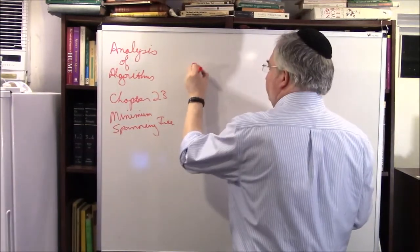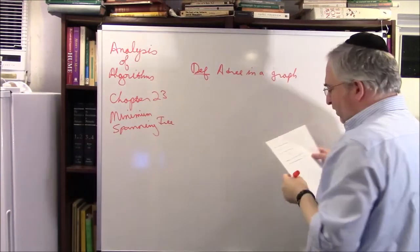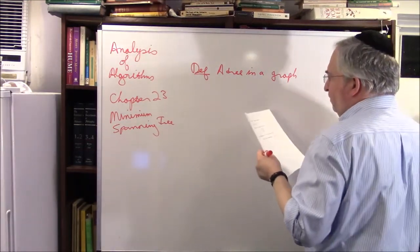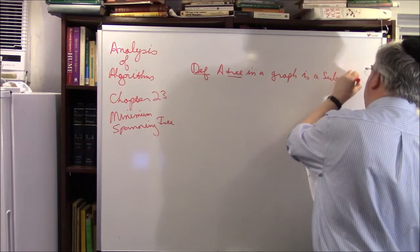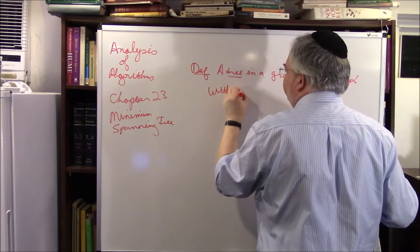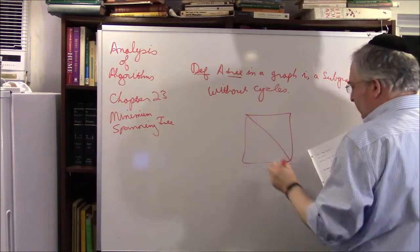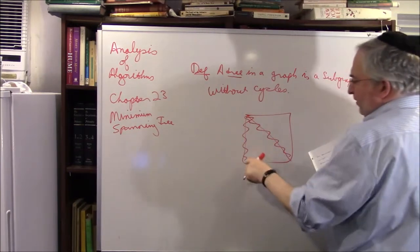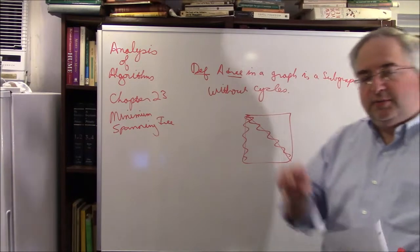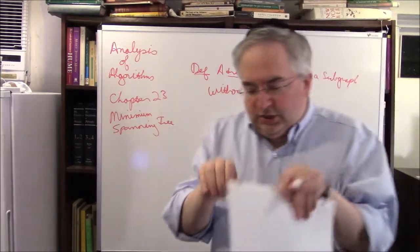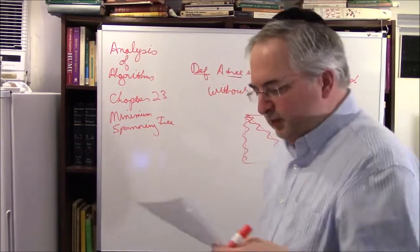Definition: a tree in a graph — the graphs can be directed or undirected — is a subgraph, in other words part of the graph, without cycles. If this is a graph, then the tree is something like this. If I added this edge there would be a cycle. A cycle means like a circle — you'd be able to go around. Trees don't have cycles; think of father, son, children, grandchildren — no intermingling.